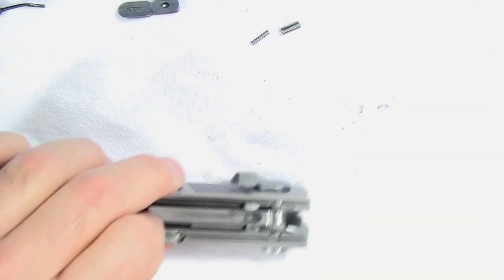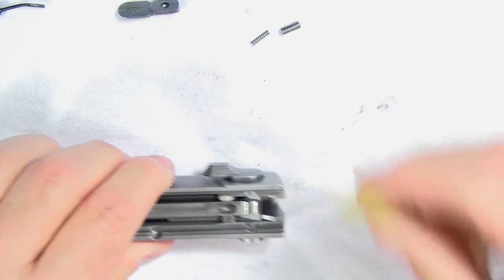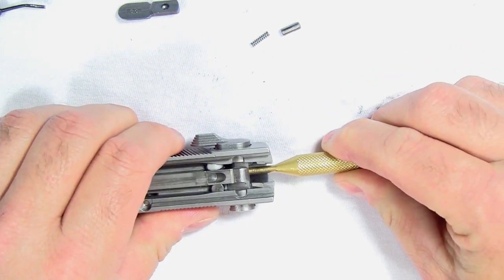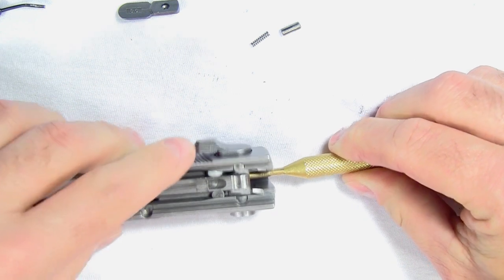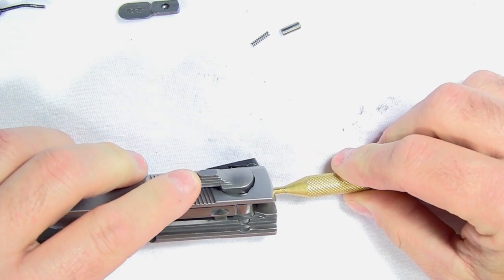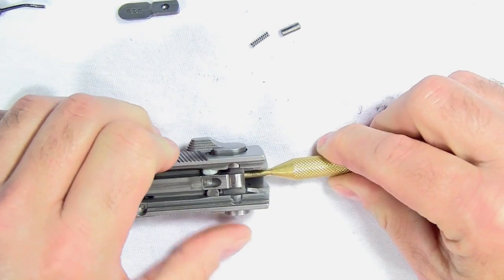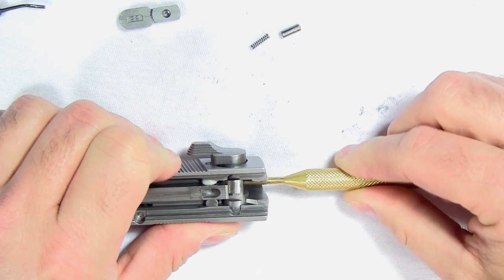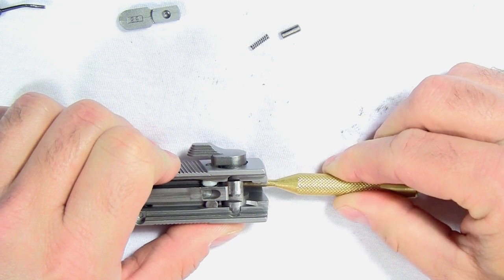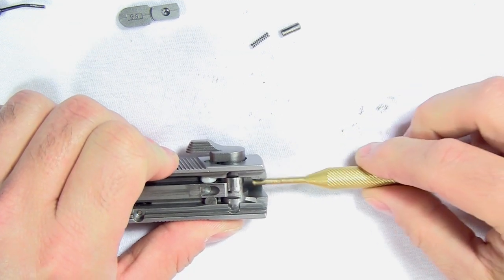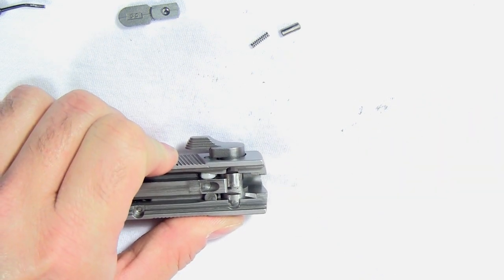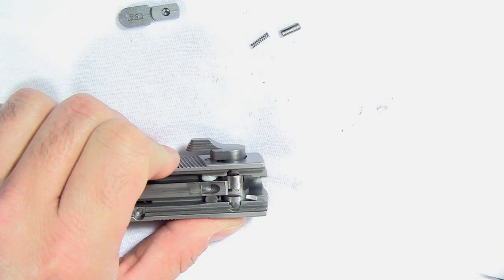Next, take the brass punch and push it in against the firing pin, which you can still access as long as the safety is showing in the fire position. Just push it, then take your thumb and start to slide the safety off. You'll reach a point where you can no longer push it any further because the brass punch is in the way.